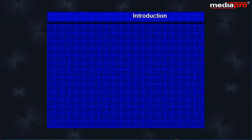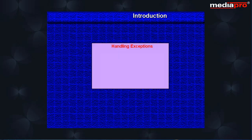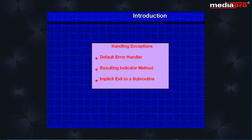In this chapter, we will look at the different methods of handling exceptions in an RPG program. There are three options: the default error handler, the resulting indicator method, and implicit exit to a subroutine.